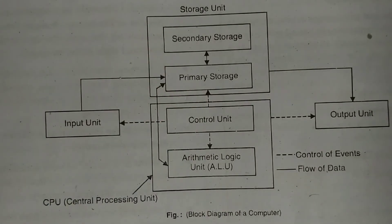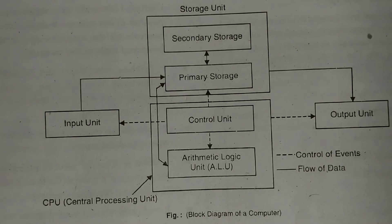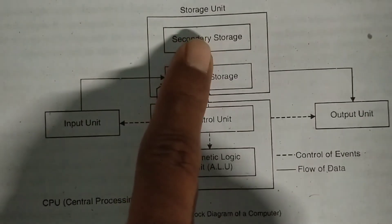In secondary storage, data can be stored permanently, so whenever we want the data we can retrieve it. Examples of secondary storage are floppy disk, compact disk, hard disk, and magnetic tape. The memory unit works under the control of the control unit.